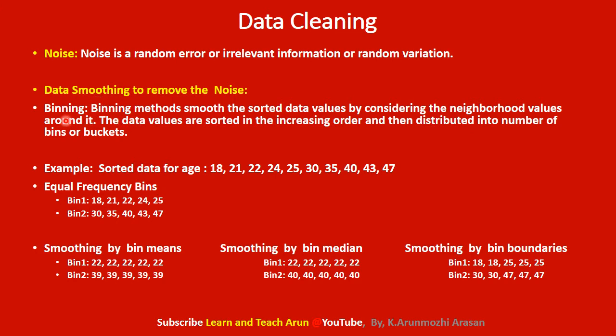The first smoothing technique is the binning method. In the binning method, you sort all the data values for an attribute and divide them into a number of buckets or bins. For example, if the attribute is age and there are 10 values, sort them in increasing order. You can use equal width binning or equal frequency binning to distribute data values across the bins.